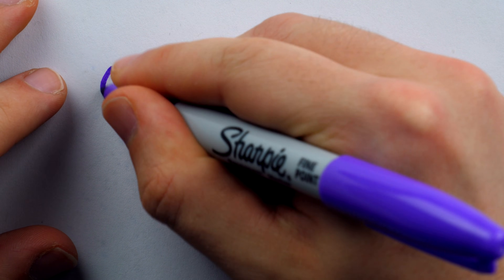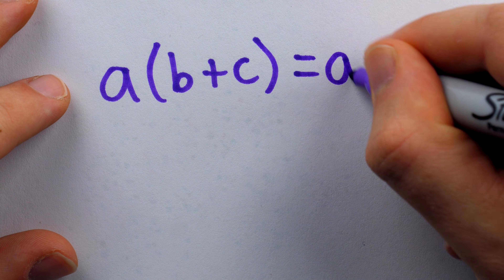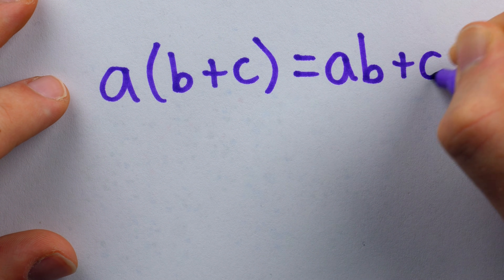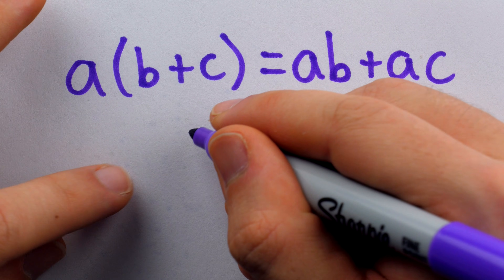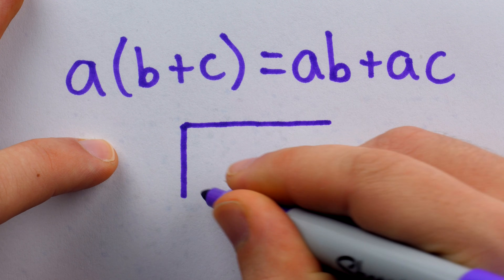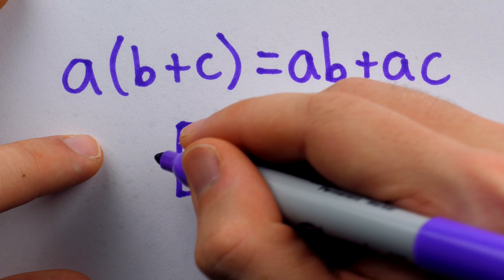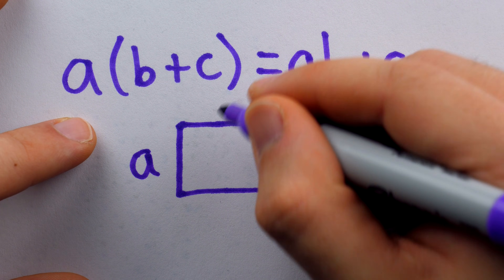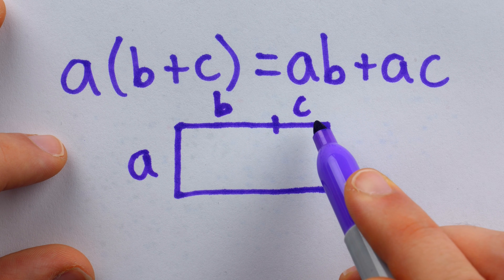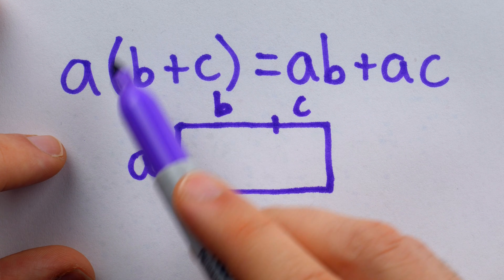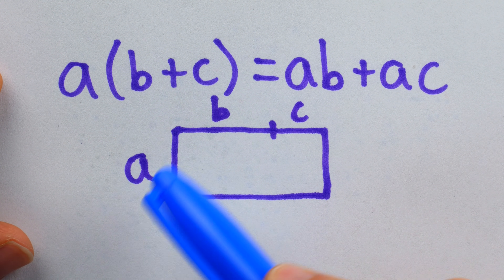Another classic example comes from the distributive property. How do we know that a times (b plus c) is equal to ab plus ac? How do we know that multiplication distributes over addition like this? Well, we can justify it using a rectangle and calculating its area in two different ways. Let's say we have this rectangle, and its width is a, and its length is b plus c. This part has a length of b, this part has a length of c, so in total the length of the rectangle is b plus c. What's the area of the rectangle? Obviously, if I just do height times length, it's a times (b plus c).